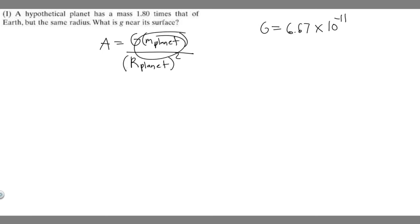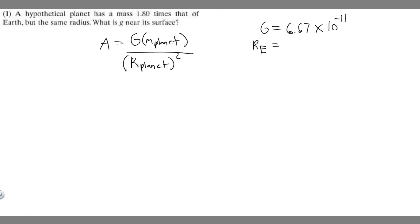Now we need to determine the mass of our planet and the radius of our planet. They say the mass is 1.8 times that of Earth, but the radius is the same. So essentially the radius of our planet is the same as the radius of the Earth. The radius of the Earth is something you also shouldn't need to memorize — it's equal to 6.38 times 10 to the 6th meters. This is the radius of our Earth, and it's the same as the radius of our planet because they tell us so.